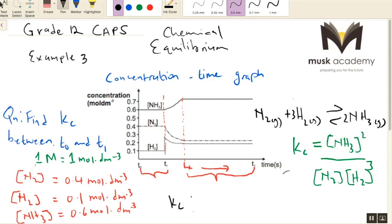you will have, you just have to substitute what you have here. So for products, you'll have 0.6 squared divided by, for nitrogen you have 0.4, and for hydrogen you have 0.1, and then you'll have your cube here. And then you punch the calculator quickly. So when you punch the calculator, the answer becomes 9 times 10 to the power of 3.